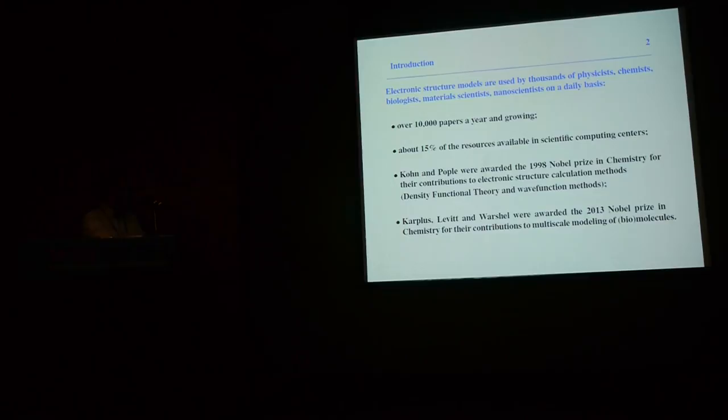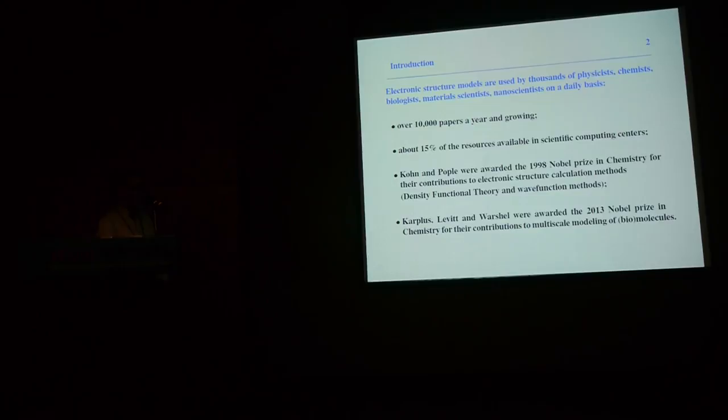The importance of this field for applied sciences was acknowledged by two Nobel Prizes in chemistry. The first one was awarded to Kohn and Pople for contributions to the main two electronic structure calculation methods. Last year, Karplus, Levitt, and Warshel shared the Nobel Prize in chemistry for developing multiscale models in which the finer scale is dealt with using electronic structure methods.